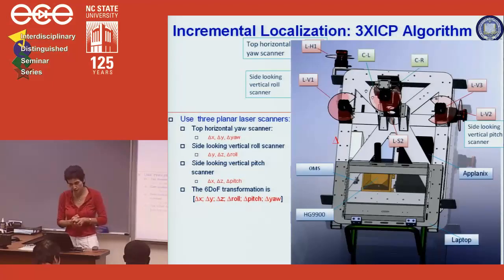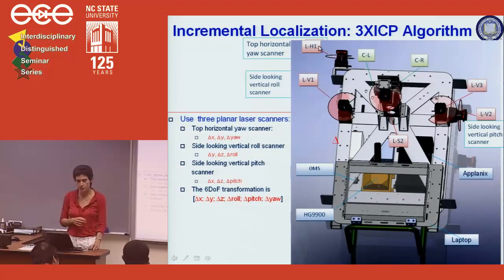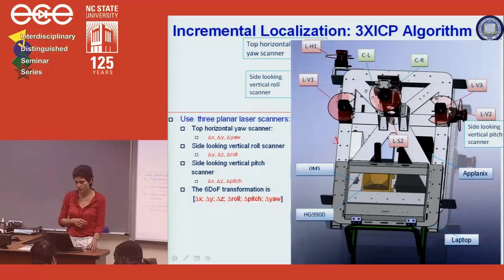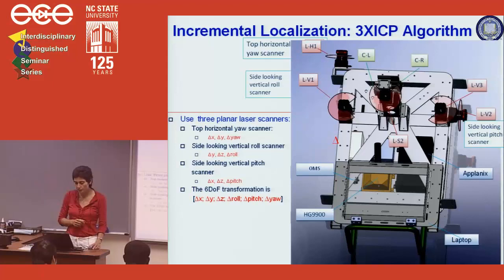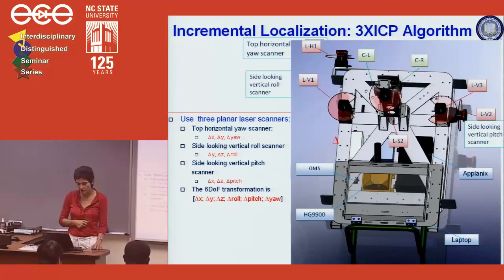This gives us the simplest incremental localization algorithm: three times ICP. It uses the top horizontal yaw scanner LH1 to give delta X, delta Y, and delta yaw. Then it uses the side-looking vertical roll scanner to give delta Y, delta Z, and delta roll. And a side-looking vertical pitch scanner gives delta X, delta Z, and delta pitch. Concatenating these provides all six degrees of freedom.